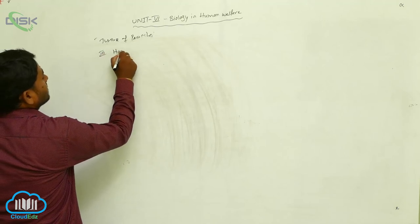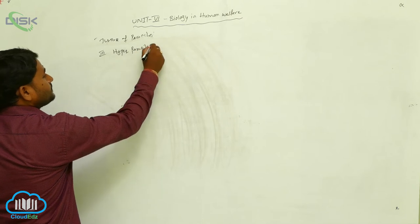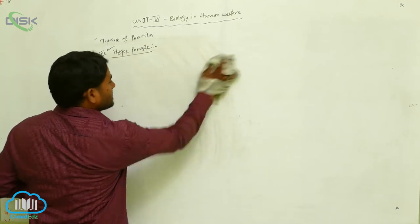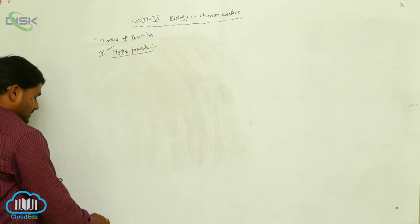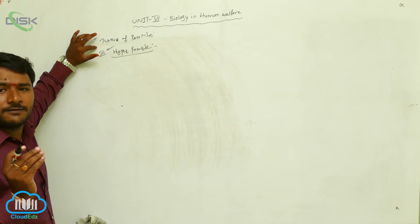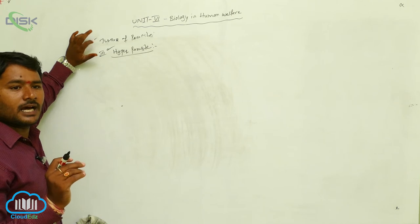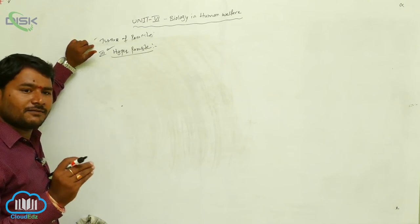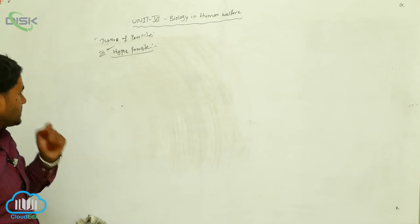The third type is the hyper parasite. A parasite which lives inside another parasite, or which parasitizes another parasite, is called a hyper parasite.